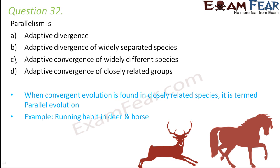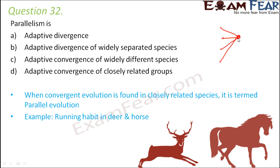We have already discussed about convergent evolution. What is convergent evolution? It says that when completely unrelated groups tend, by adaptations, to have something in common — they have something which performs the same function — then we call it convergent evolution. Sometimes it might happen that convergent evolution is found in closely related species.